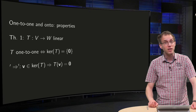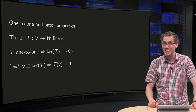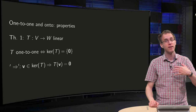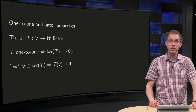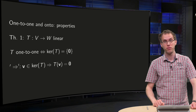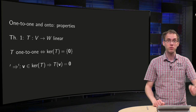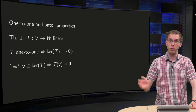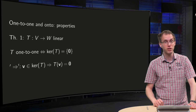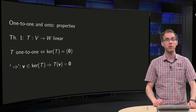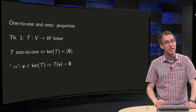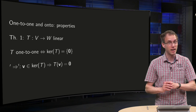You may remember from calculus that it is often not easy to establish whether a function is one-to-one or not. In the case of a linear transformation, you have an easy criterion, which you will see in the first theorem of this video. Something similar holds for the codomain versus the range of functions. Determining the range of a function is in general very difficult in calculus, but in the linear case you sometimes have an easier criterion, as you will see in the second theorem of this video.